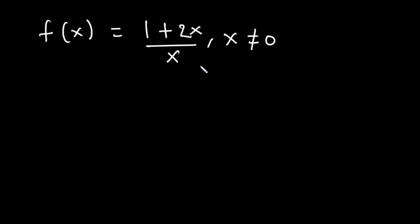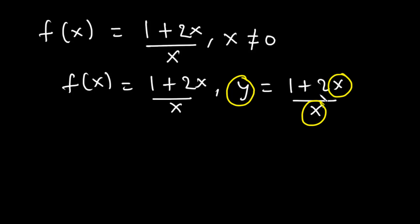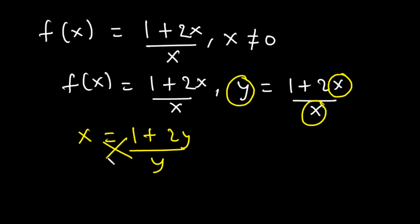To find the inverse of the function f(x), we first need to replace f(x) with y. So f(x) = (1 + 2x) / x becomes y = (1 + 2x) / x. Next, we interchange the positions of y and x and make y the subject, so we have x = (1 + 2y) / y.